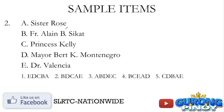Sample item number 2. You have Sister Rose, Father Alain Bisicat, Princess Kelly, Mayor Bert K. Montenegro, and Dr. Valencia. Kung inyo pong napapansin, iba-iba po yung format ng ating mga given items. Sister Rose is title plus first name only — file as is, starting with S-I-S. Father Alain Bisicat is title plus full name — file as Bisicat, Alain B., Father.